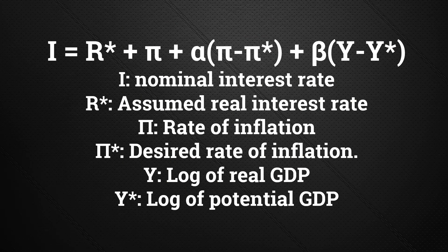Here we see the equation. Note that the first three terms: we already know this relationship — the nominal interest rate is equal to the real interest rate plus inflation. Go ahead and pause the video and make sure you can make sense of that within the equation. Then we have alpha and beta elements. Alpha and beta are just multipliers that can be adjusted for the estimated magnitudes of the importance of inflation or output. The alpha estimator indicates how important the inflation elements are, and beta modifies how important output indicators are within our equation.